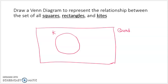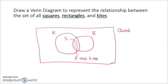I draw the set of rectangles overlapping with the kites. What falls in the middle are things that are both rectangles and kites — if it's a rectangle and it's a kite, it must be a square. So this intersection is the set of all squares. That's the relationship between squares, rectangles, and kites.